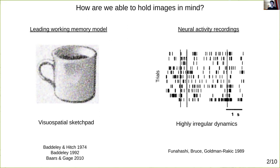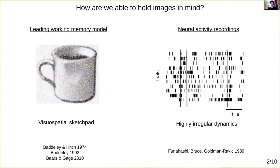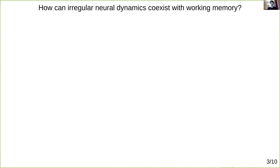A key challenge is that neural activity is often highly irregular, with single neurons producing almost random-looking spike trains even across repeated trials of the same task, as in this recording of a cortical neuron spikes as a monkey performed a working memory task. So how can such irregular neural dynamics coexist with working memory?